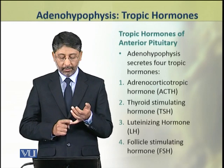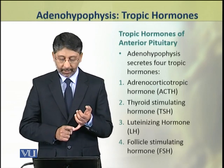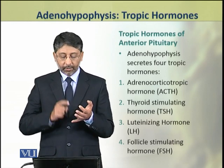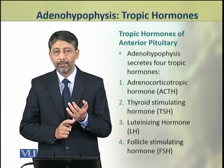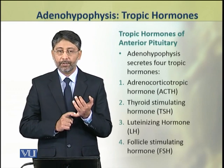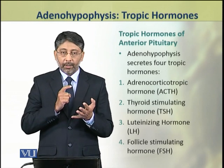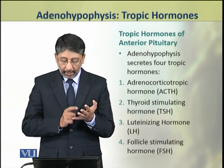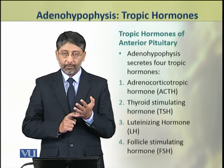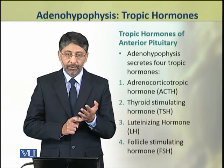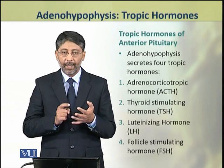The four tropic hormones are: number one, adrenocorticotropic hormone (ACTH); thyroid stimulating hormone (TSH), also called thyrotropin stimulating hormone; and luteinizing hormone (LH) and follicle stimulating hormone (FSH).